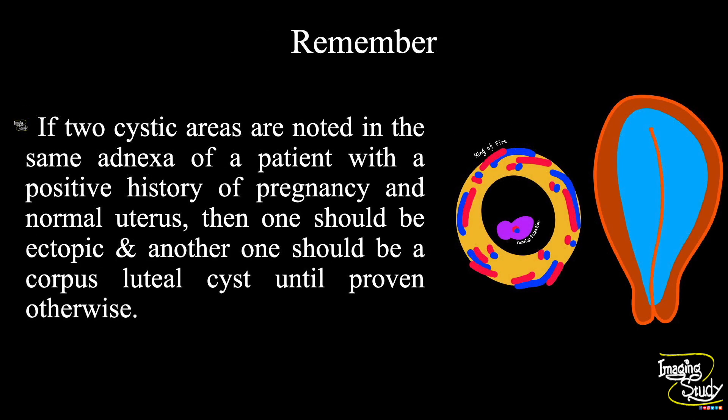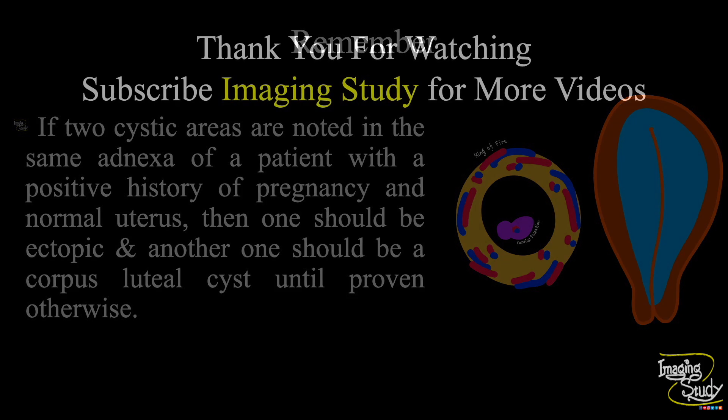The take-home message: when two cystic areas are seen in the same adnexa of a patient with a positive history of pregnancy and a normal uterus, one cystic area should be considered ectopic pregnancy and the other the corpus luteal cyst until proven otherwise. Color Doppler ultrasound may help further — we have uploaded another ectopic case video with color Doppler findings, linked in the card above.